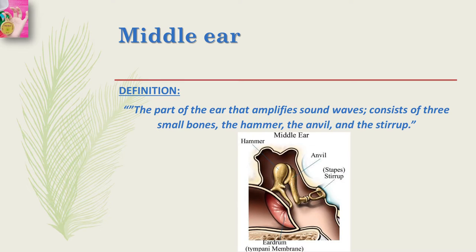The middle ear definition: the part of the ear that amplifies sound waves consists of three small bones - the hammer, the anvil, and the stirrup. These three small bones amplify the sound. You can see their structure in the picture - they are named by the resemblance of their shape.